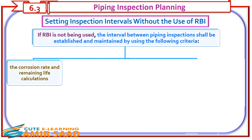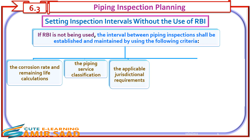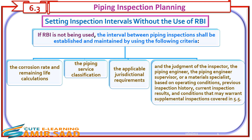Setting inspection intervals without the use of RBI: If RBI is not being used, the interval between piping inspections shall be established and maintained using the following criteria: the corrosion rate and remaining life calculations; the piping service classification; the applicable jurisdictional requirements; and the judgment of the inspector, the piping engineer, the piping engineer supervisor, or a materials specialist — based on operating conditions, previous inspection history, current inspection results, and conditions that may warrant supplemental inspections covered in Section 5.5.